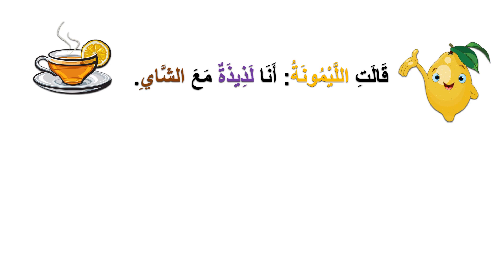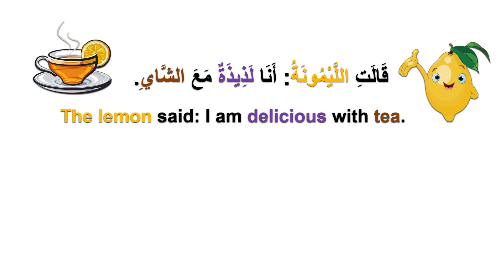The lemon said: قالت الليمون، أنا لذيذة مع الشاي — I'm delicious with tea. مع means with, الشاي means tea.